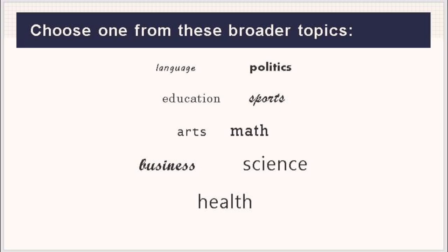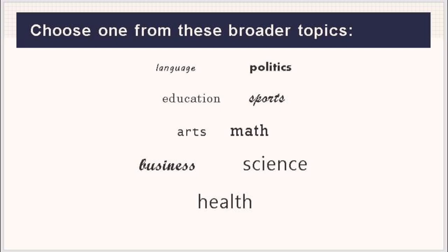Broader topics include language, education, arts, business, health, politics, sports, math, science, etc. — whichever interests you. In my case, I am interested in language. So what I will do is think of subtopics under this broad topic in which I am knowledgeable and interested. It's important that I'm knowledgeable about the topic, because if not, I can only get as far as the title and won't be able to finish writing. When I'm interested in the topic, once I start writing, I am determined to finish my work because I genuinely want to learn more about it.